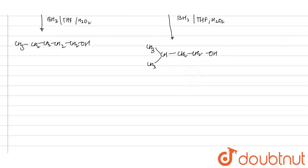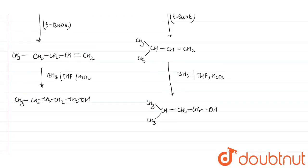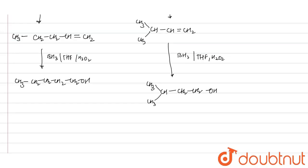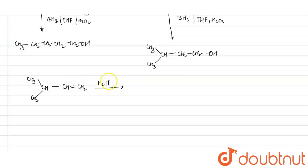Now, when the B compound reacts with H2/Pt - suppose this is your B compound and this is your B' compound. You need to check which is our B compound. When the branched alkene (CH3)2C=CH-CH3 reacts with H2 in the presence of platinum metal, it will form the alkane (CH3)2CH-CH2-CH3, which is 2-methylbutane.